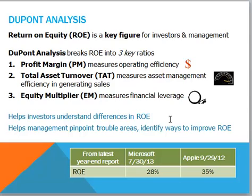DuPont Analysis helps investors understand differences in return on equity, and helps management pinpoint trouble areas and identify ways to improve return on equity. We saw that Microsoft had a return on equity of 28%, while Apple's return on equity was 35%. DuPont Analysis will help us understand how these different return on equities were derived.